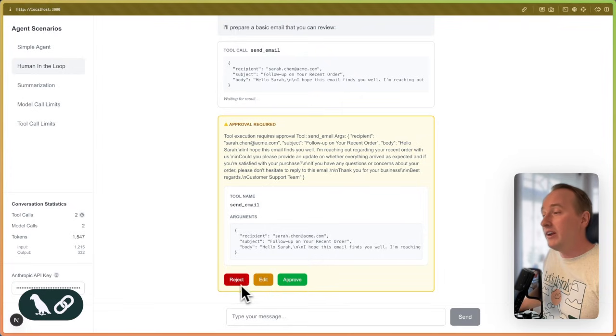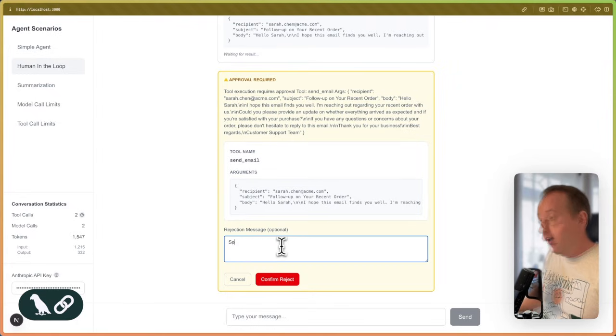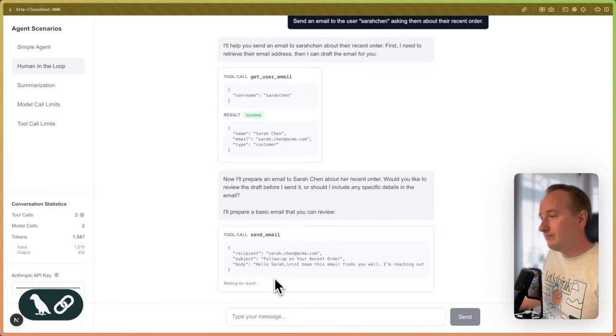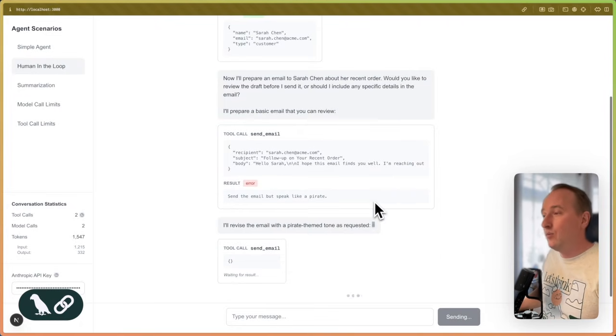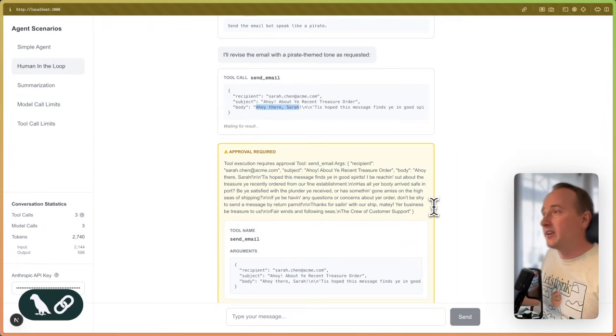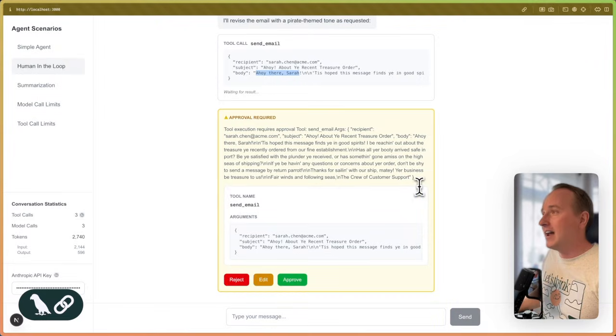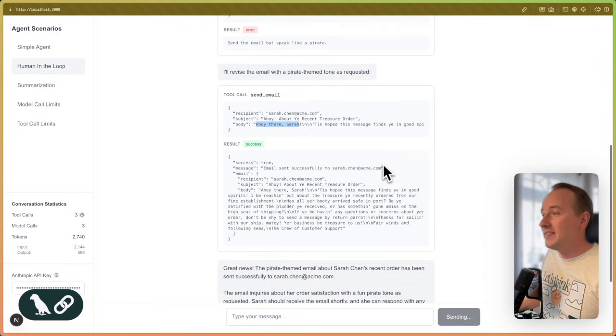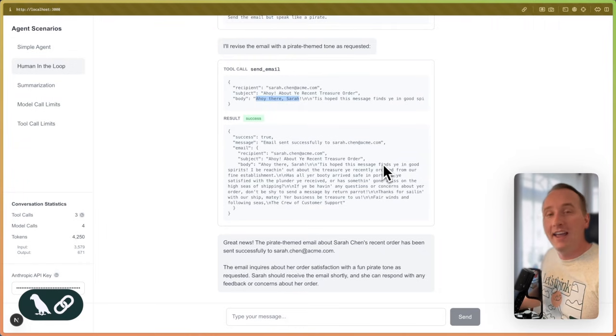So we can now reject, edit or approve that workflow. Let's reject it. Let's say sent the email, but speak like a pirate. Confirm the reject. So the tool call failed. We gave the agent some information how it should change that tool call. And now in the second attempt, we now see that Sarah is greeted properly like a pirate. Ahoy there. And I like this interaction with the customers. So let's approve that. And this tool call now passes and the email is being sent.